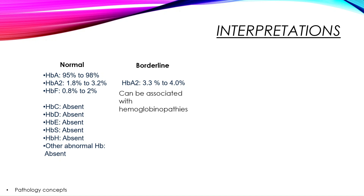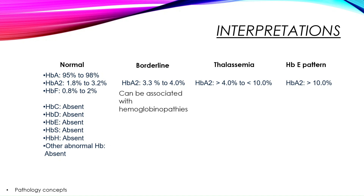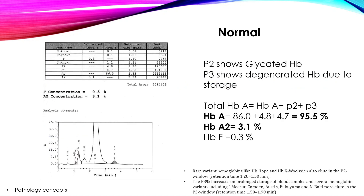In thalassemias, HbA2 is more than 4% to less than 10%. In hemoglobin E pattern, HbA2 is usually more than 10%, because on the HPLC graph HbA2 and HbE are both eluted at the same retention time. We cannot differentiate between HbA2 and HbE just by looking at the graph, but we can differentiate by knowing the percentage of hemoglobin.